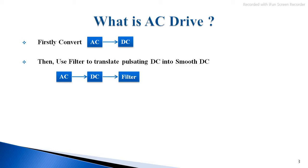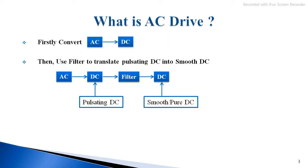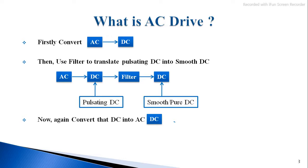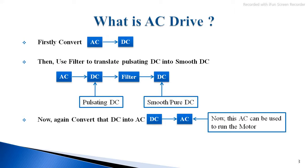As you can see on the display, after the conversion of AC into DC we use the filter, which you are seeing in the blocks. After using the filter, it provides smooth or pure DC. The next step after getting smooth DC is to convert that DC back into AC, which can then be used to run the motor.